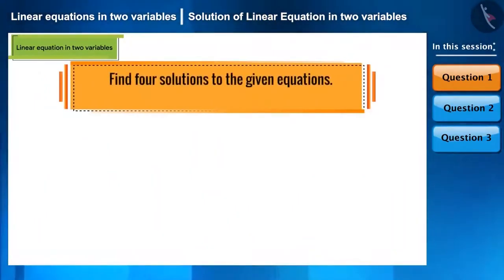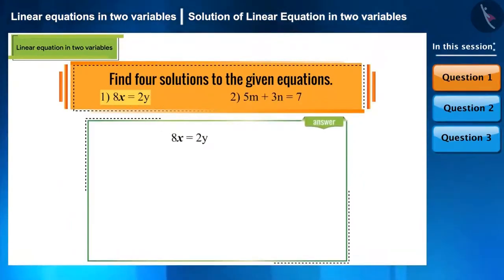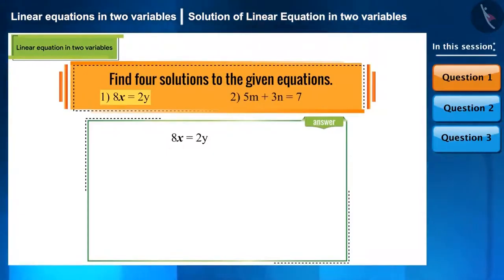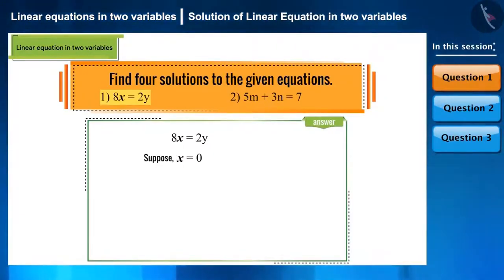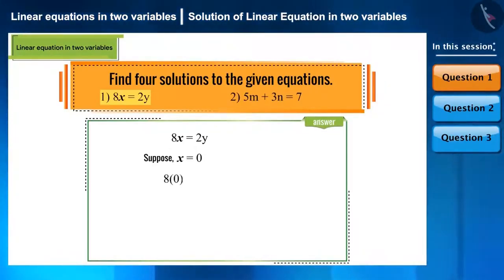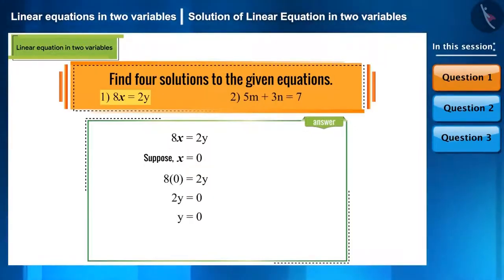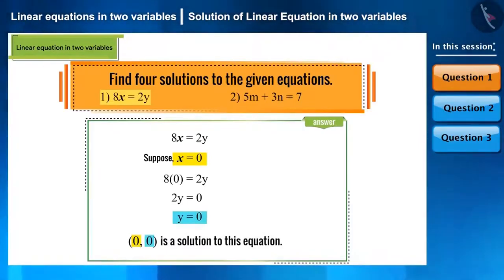Find four solutions to the given equations. Let's take the first equation: 8x is equal to 2y. A simple way to find the first solution is to assume x as 0 and find the corresponding value of y. Substituting x as 0 in the given equation gives the value of y as 0. Hence, (0, 0) is a solution to this equation.